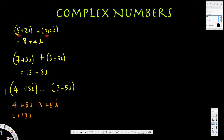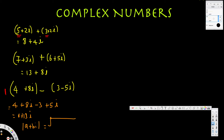Now let's find the absolute value of 1 plus 13i. We know that for a complex number a plus bi, the absolute value is the square root of a squared plus b squared. Here a is 1, so we get the square root of 1 squared plus 13 squared, which is the square root of 1 plus 169, giving us the square root of 170.